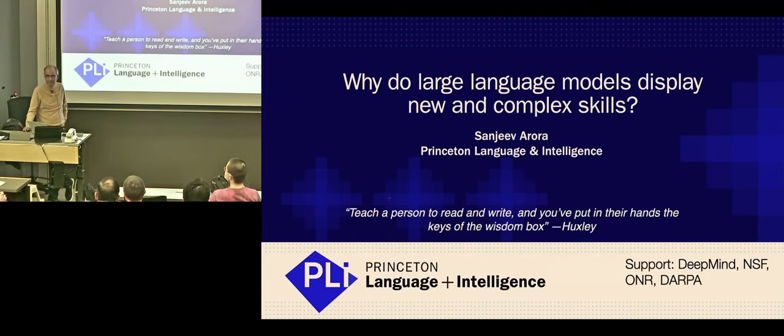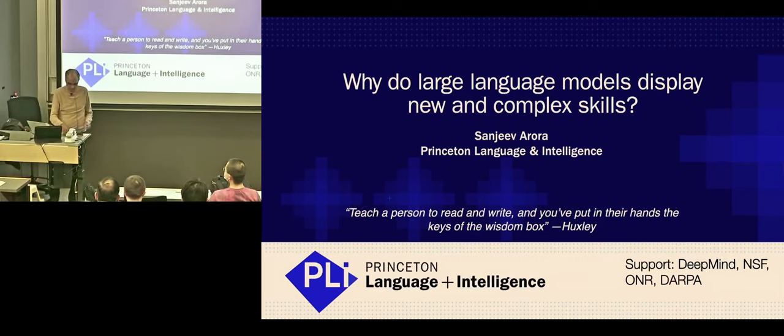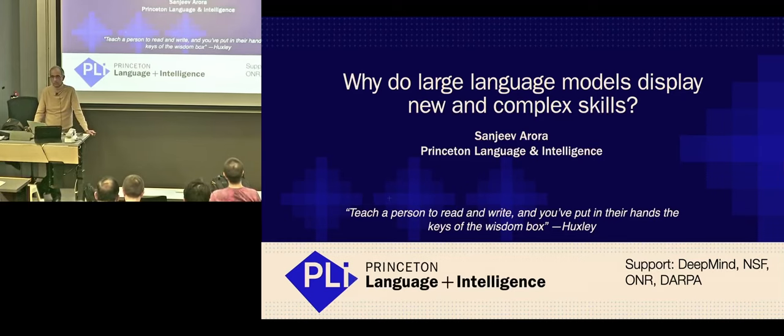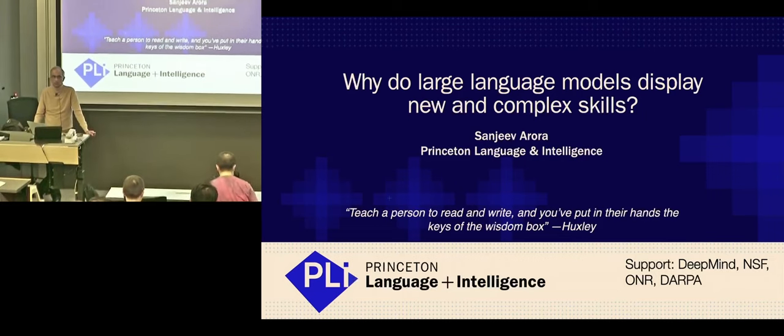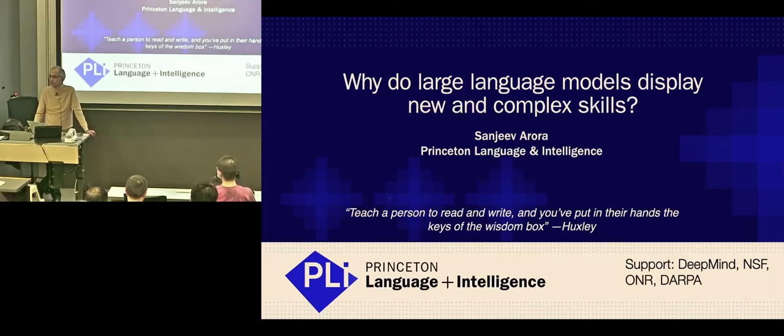Of course, he has also received a large number of prominent awards. These include the ACM Doctoral Dissertation Award in 1995, Packard Fellowship 1997, Simon's Investigator Award in 2012, Gödel Prize twice in 2001 and 2010, Fulkerson Prize in 2012, and ACM Prize in Computing in 2011. And Sanjeev is a member of the National Academy of Sciences, as well as the American Academy of Arts and Sciences, and he is also a fellow of the ACM. So it's with great pleasure that I welcome Sanjeev to tell us about the skills in large language models.